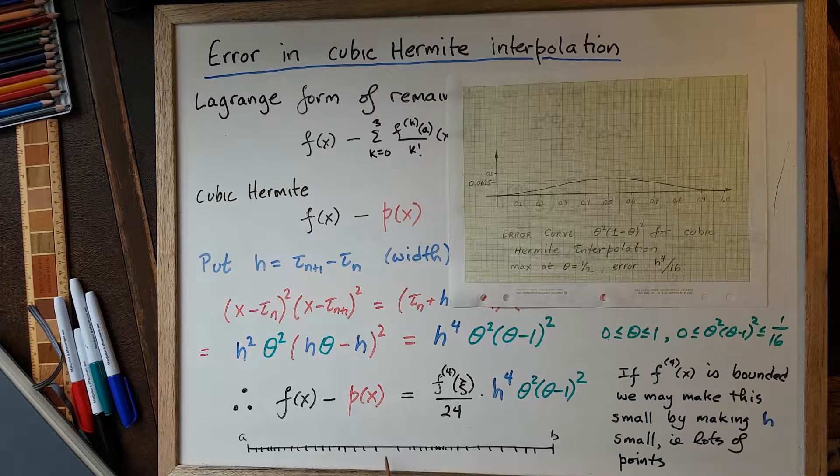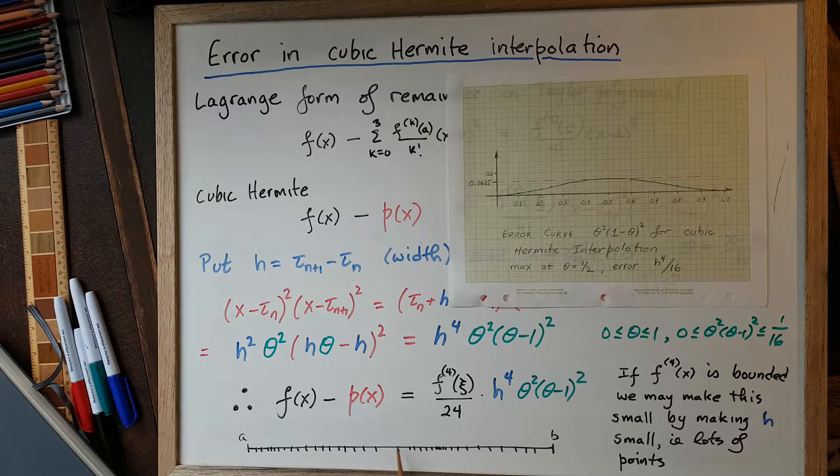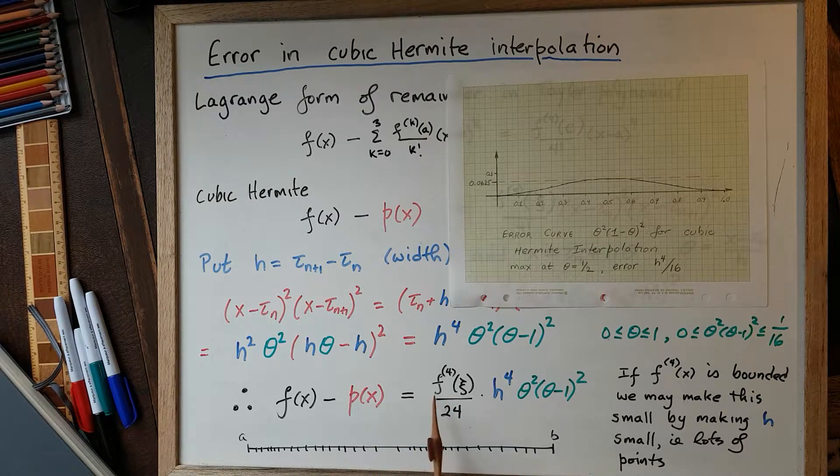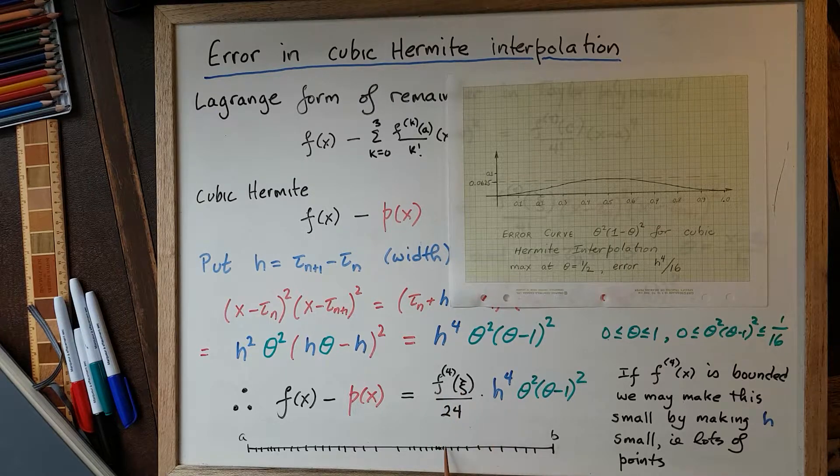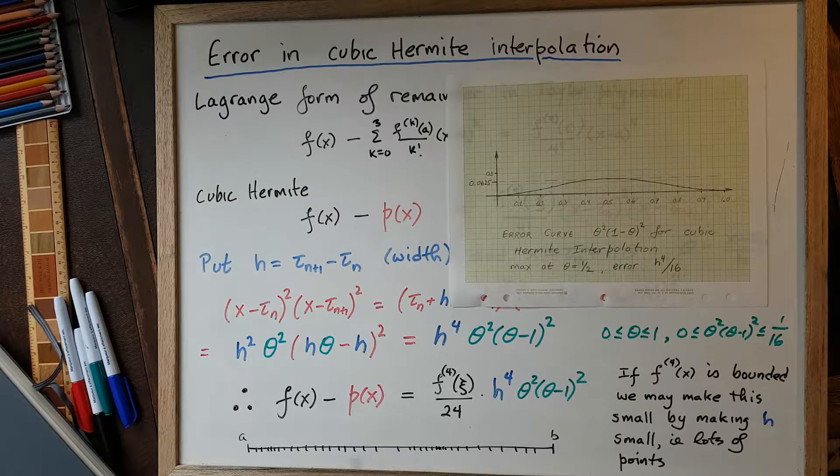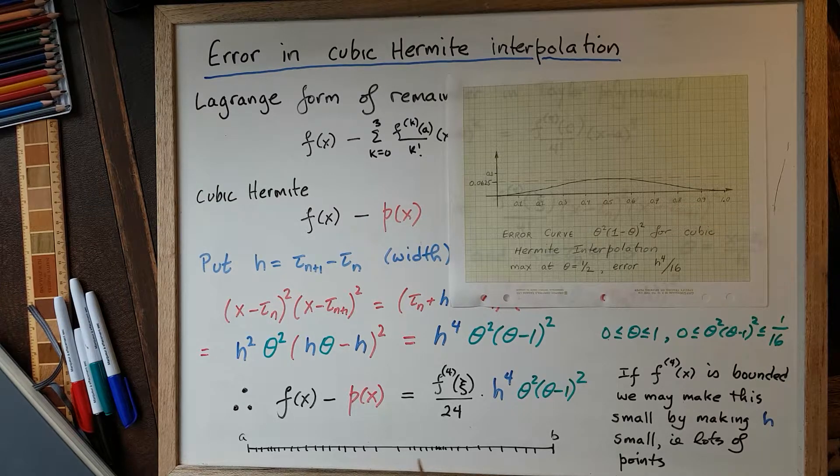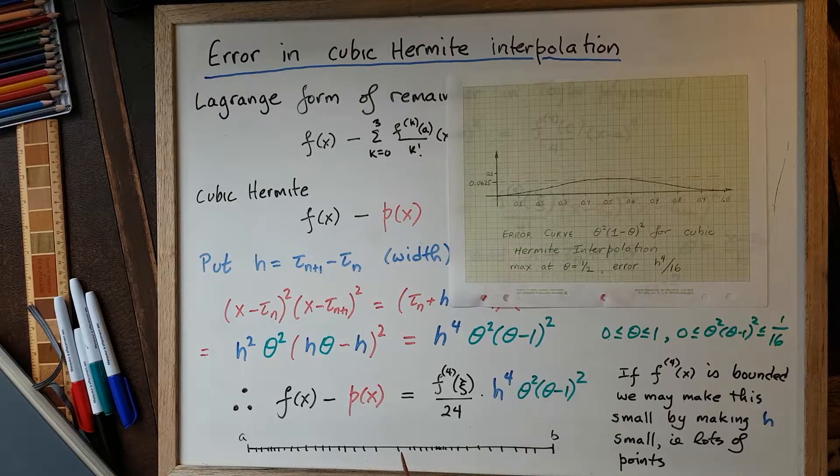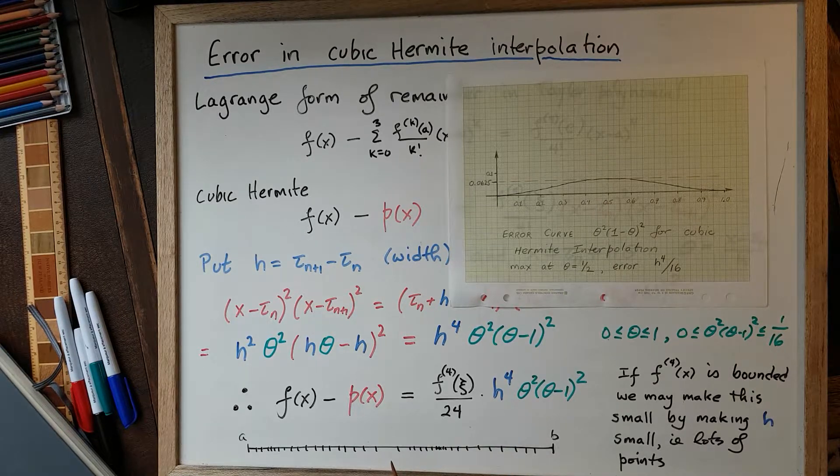And in this one, the 4th derivative is varying a lot. So you'd need a smaller h to compensate for that. But frequently, we take equally spaced and just take enough points so that this h to the power of 4 becomes very small indeed.